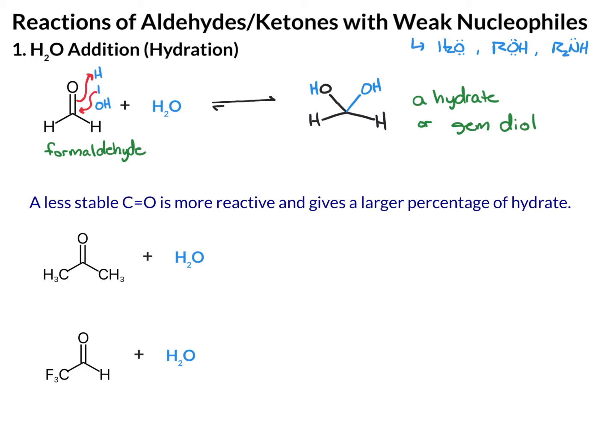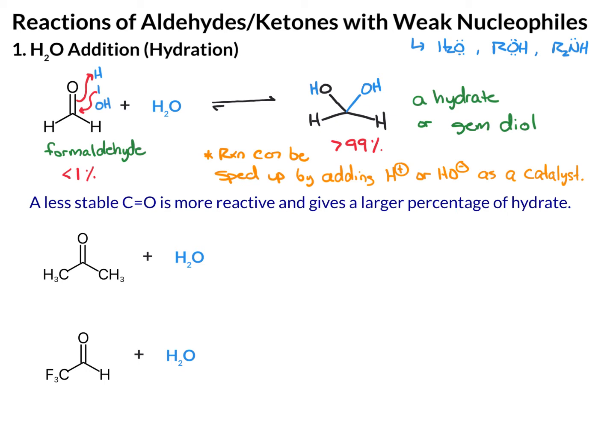If you just let formaldehyde sit in the presence of water, this reaction will take place. In fact, greater than 99% of the molecules will be in the hydrate form, and less than 1% will be in the formaldehyde form. We can speed this reaction up by adding acid or base to catalyze the reaction. We're eventually going to look at the mechanism under neutral, acidic, and basic conditions — what I drew above is just a shortcut and not the true mechanism.